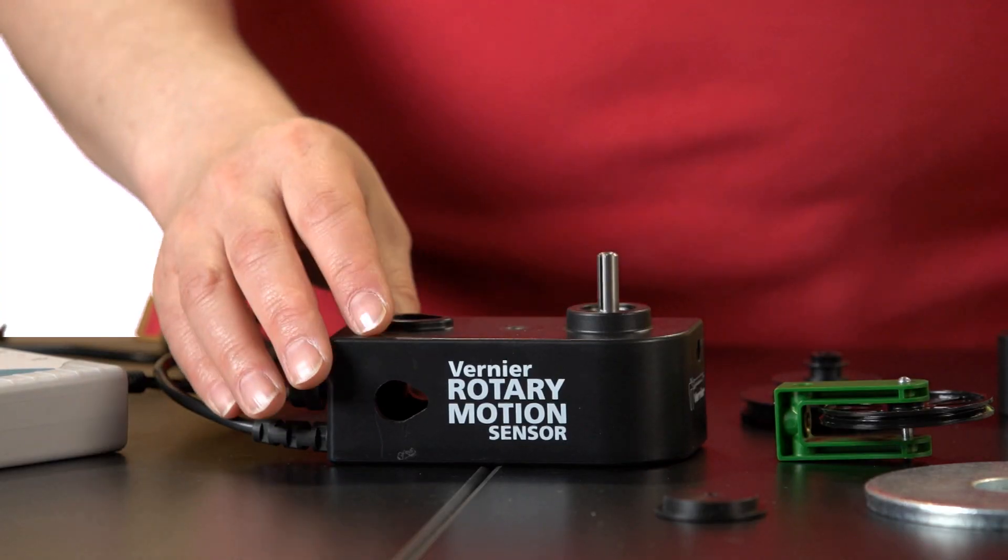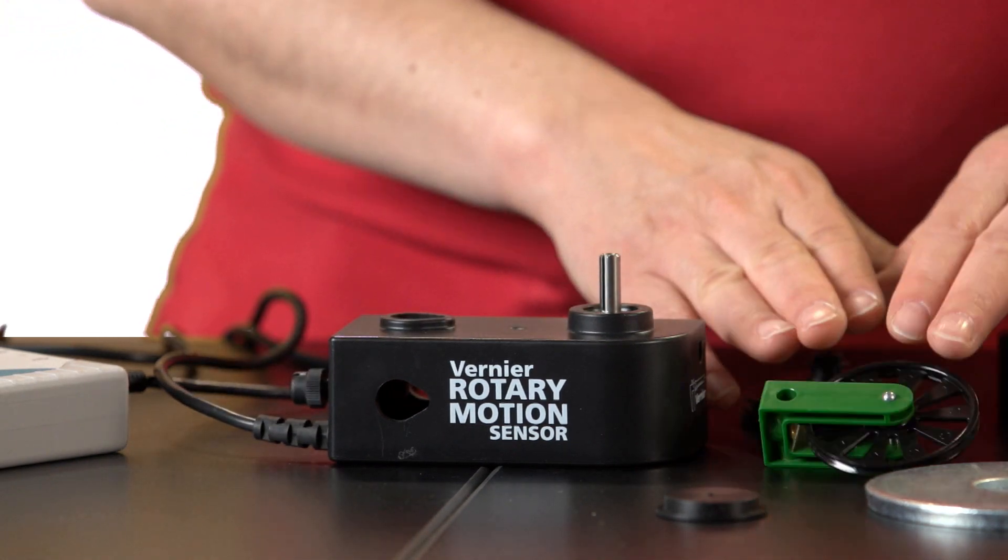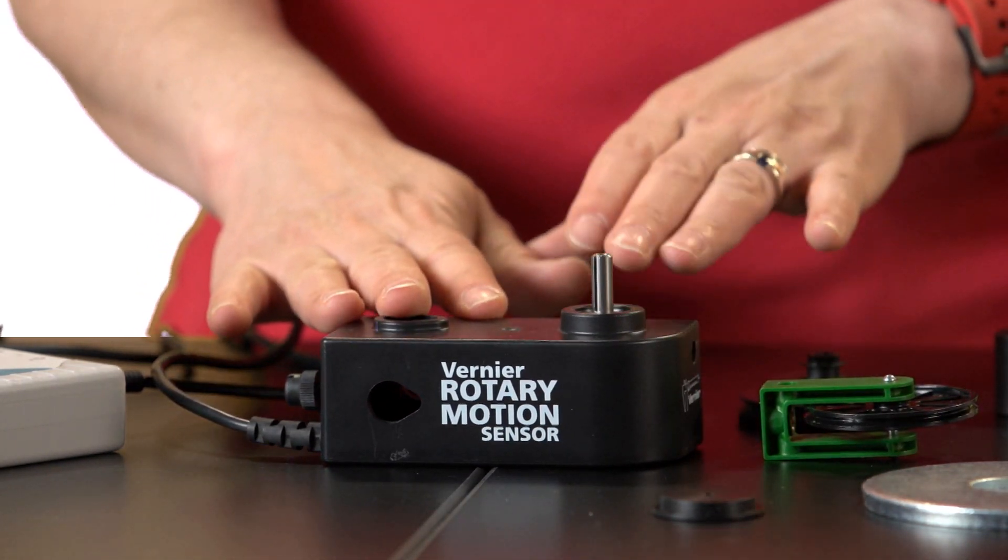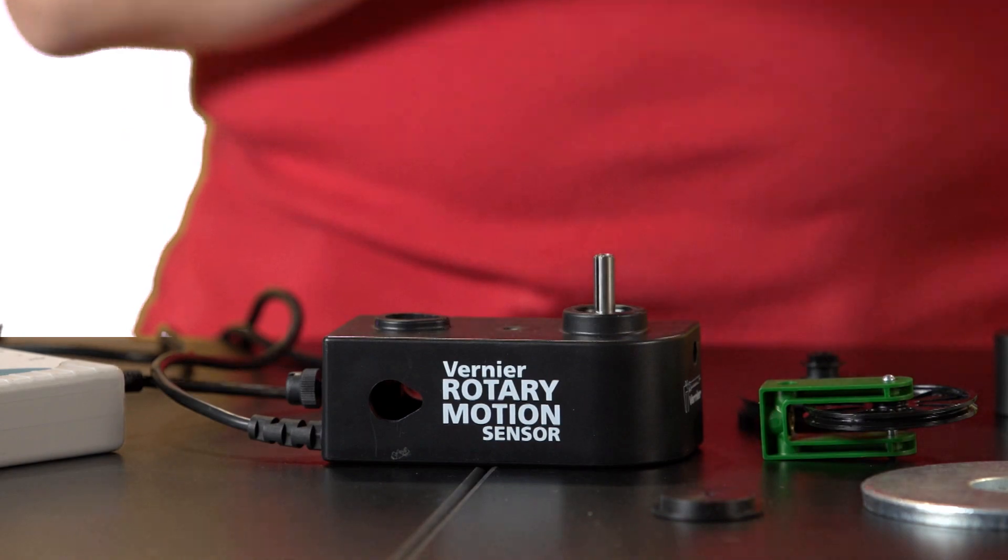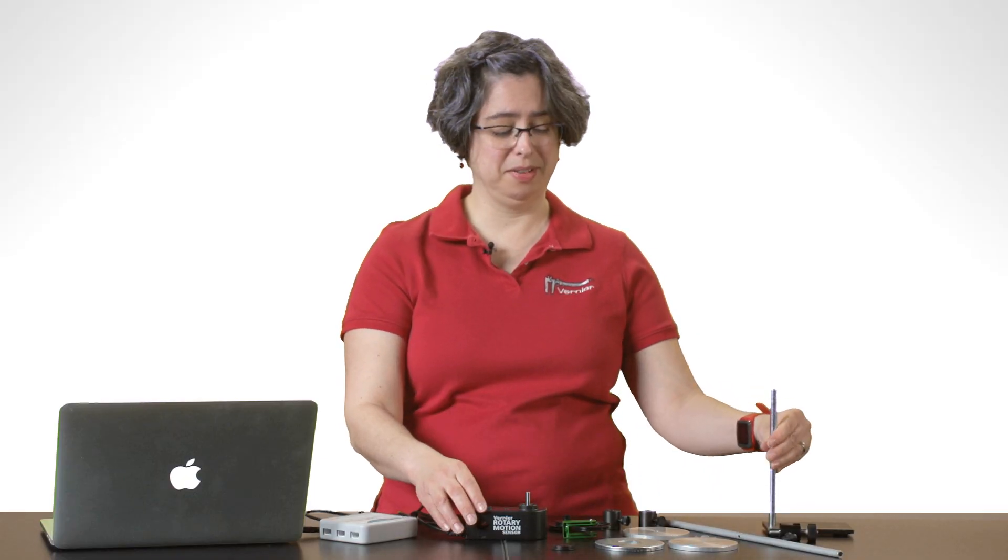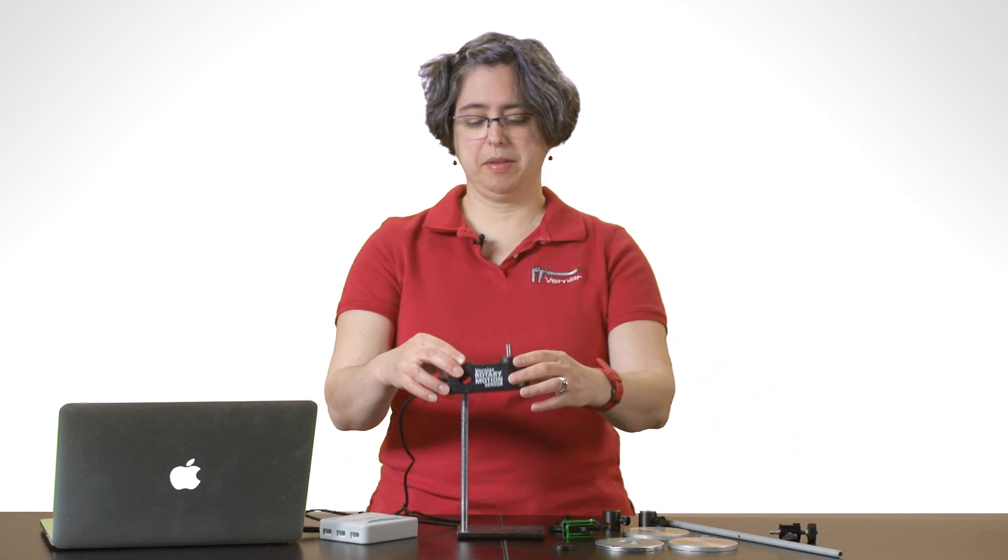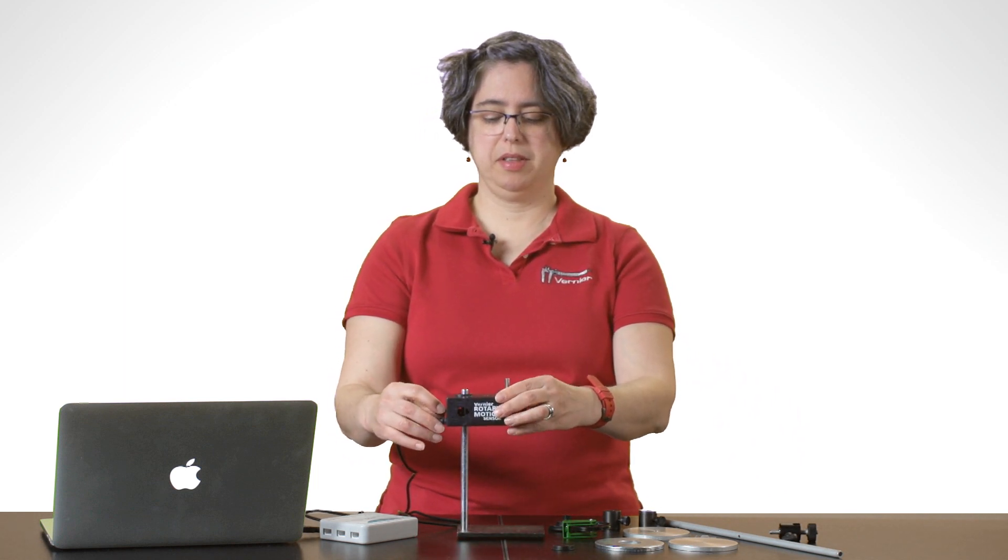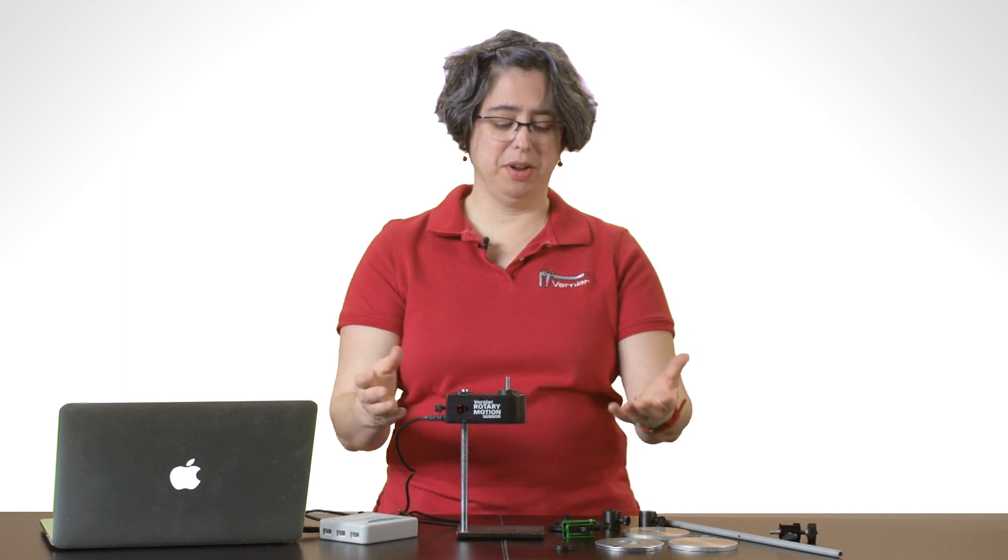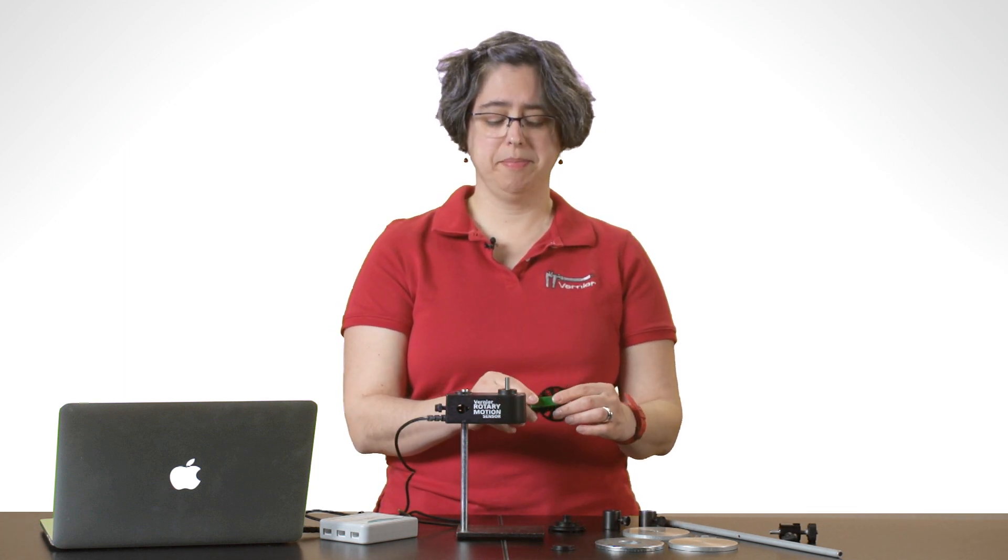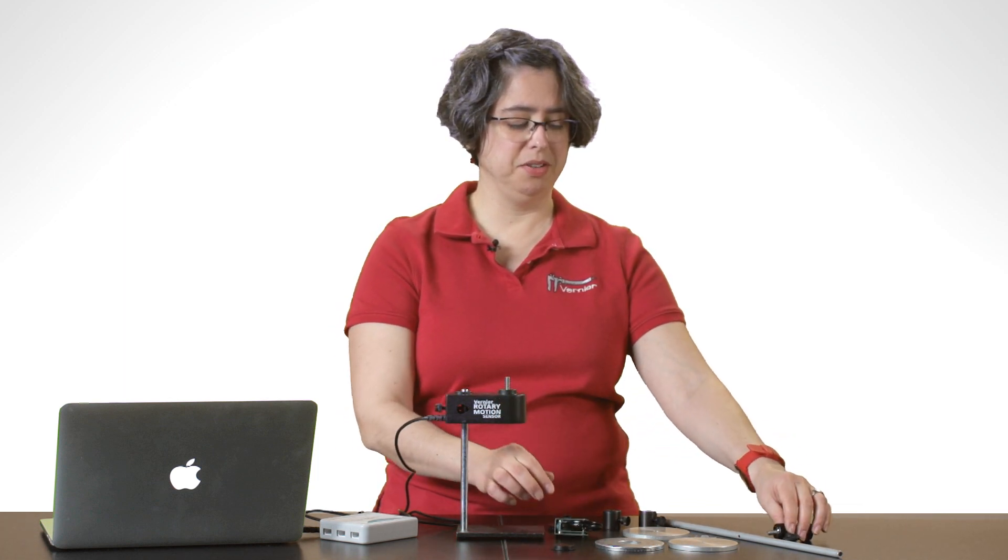So we're going to put the Ultra Pulley onto the Rotary Motion Sensor, and we're going to attach some of the attachments from the Rotary Motion Accessory Kit.